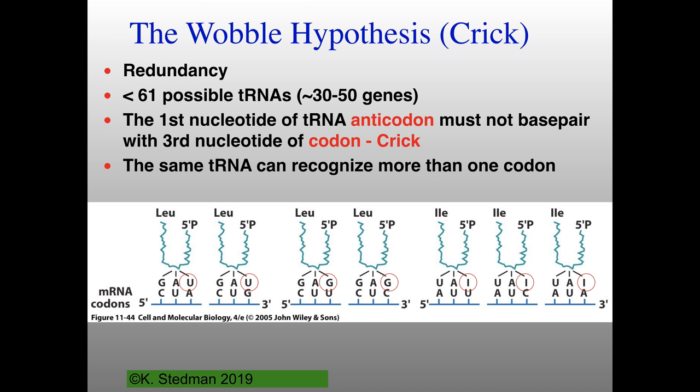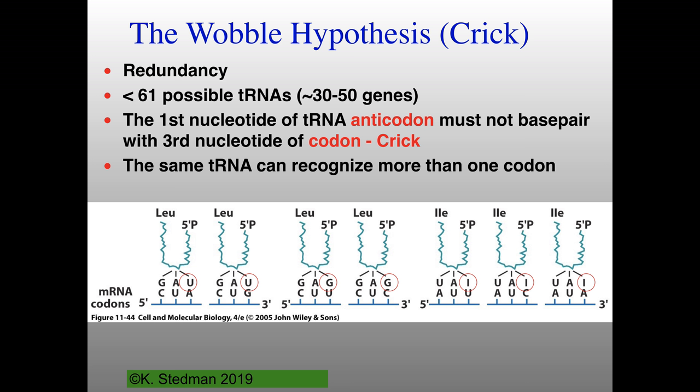Some tRNAs have a wobble at the 3' end of the codon. This is because there are modified nucleotides in tRNAs — in some cases, inosine is put on this position, and that allows different base pairing with several different nucleotides on the mRNA. Remember that the wobble actually occurs at the 3' end of the codon on the mRNA, but it's at the 5' end of the anticodon on the tRNA.